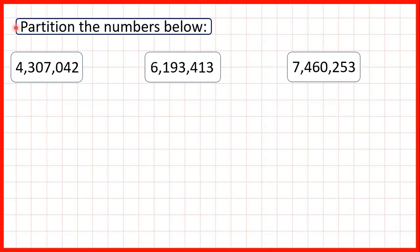We need to partition the numbers below. First we have 4,307,042. When we partition numbers, what we're doing is showing the value of each digit.